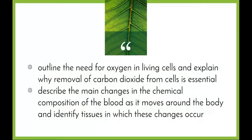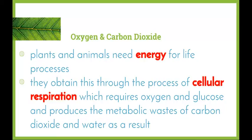So we're going to start by having a look at the two theory dot points. Oxygen and carbon dioxide: plants and animals need energy for life. The way that plants and animals obtain this energy is through the process of cellular respiration. Cellular respiration takes place in every cell of our body in the mitochondria and is a process which requires oxygen and glucose and produces the metabolic wastes of carbon dioxide and water as a result.